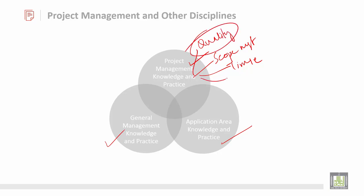Then risk management, then communication — communication is also very important. Then it talks about human resources, that's also very important. So these are the important elements of project management knowledge and practice.